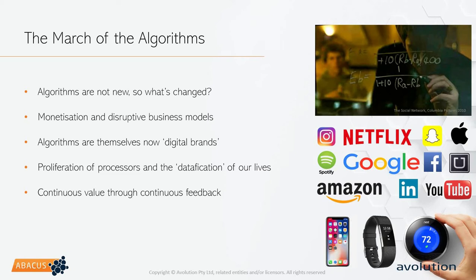Algorithms have been around for a while. Google started 20 years ago with the PageRank algorithm. There are algorithms in Netflix and YouTube to make recommendations about what you should be watching. So it should be no surprise that algorithms are becoming a very powerful thing. They're digital brands in their own right, and what they're doing is essentially data-fying our world — turning ourselves into numbers. We're looking to apply this in a more corporate setting and apply the continuous feedback that has made many of these algorithms very successful.